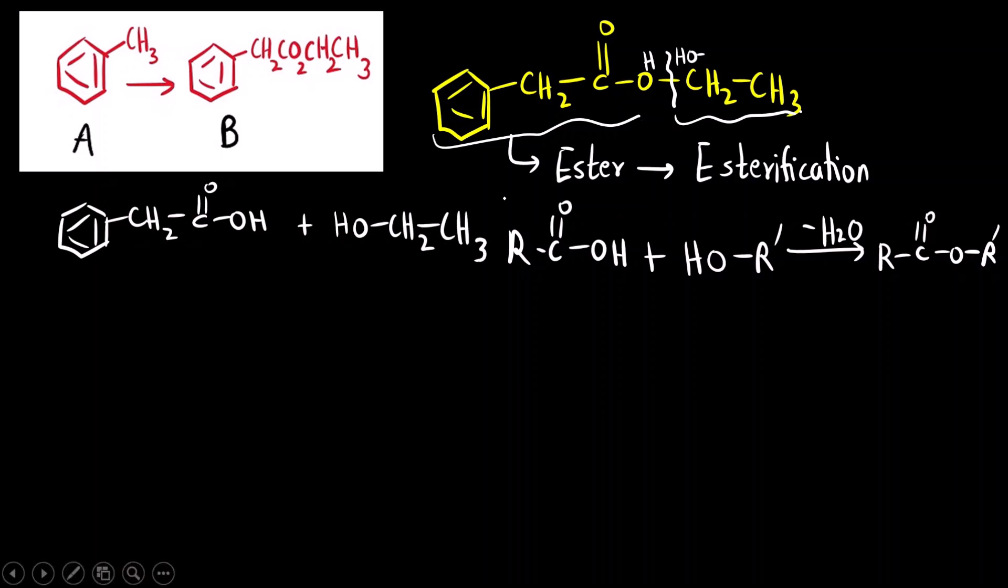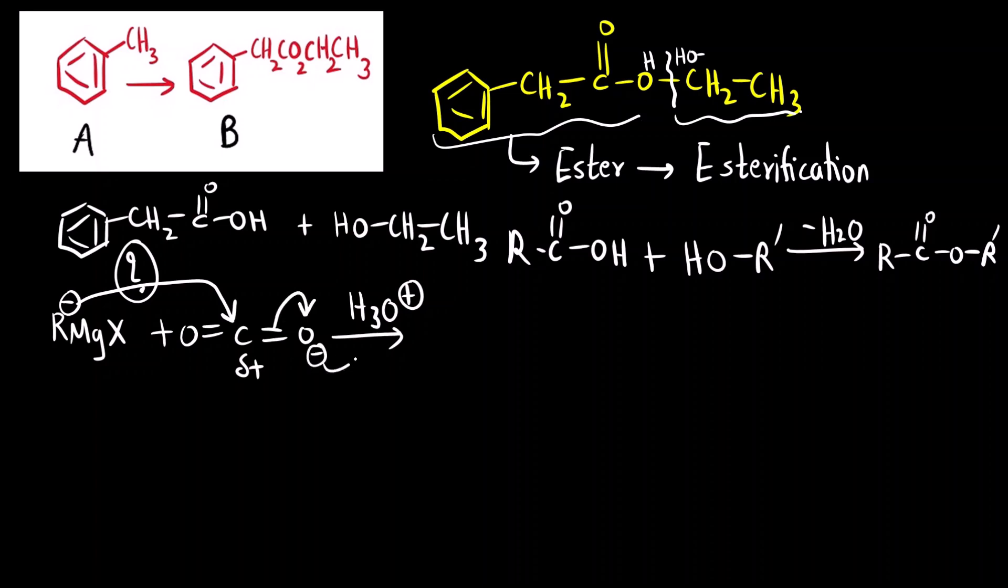Now, the question is how do you synthesize this carboxylic acid? There is one method for synthesis of carboxylic acid that involves Grignard reagent. RMGX reacts with carbon dioxide, and then acidic workup will give us R minus. This will attack the electron deficient delta plus carbon of carbon dioxide. This will open up, this will become O minus, and this O minus will pick up H plus ion from this acidic workup. And what we will get is carboxylic acid.